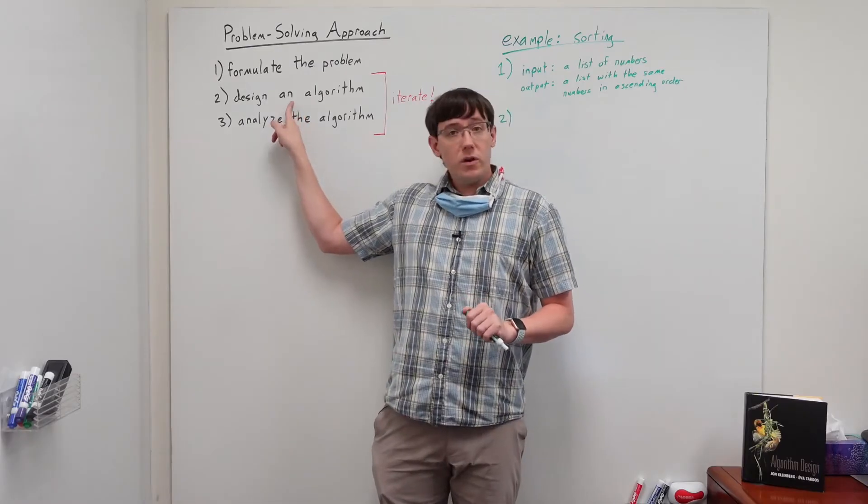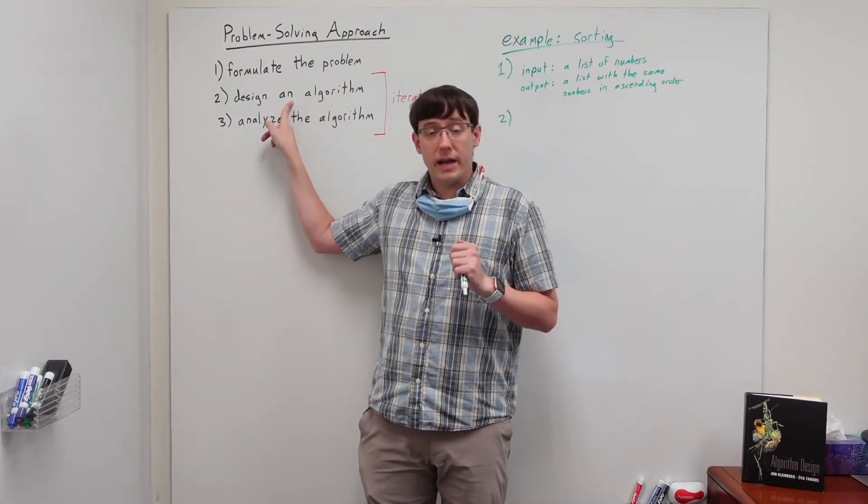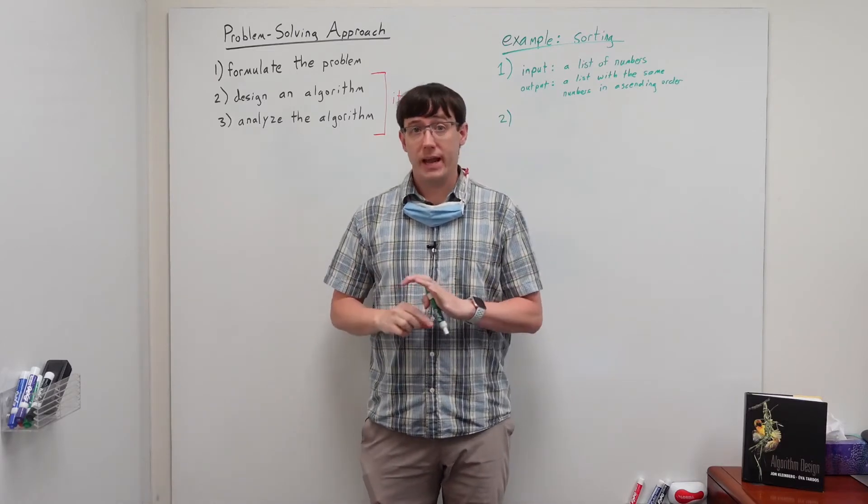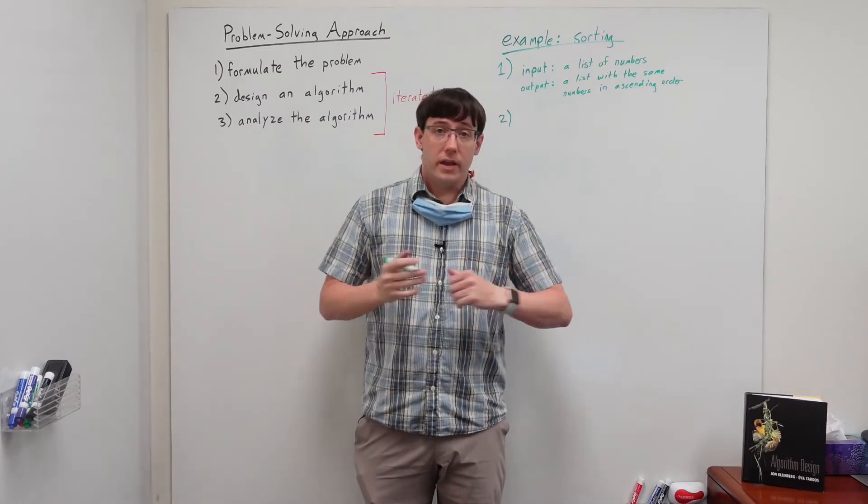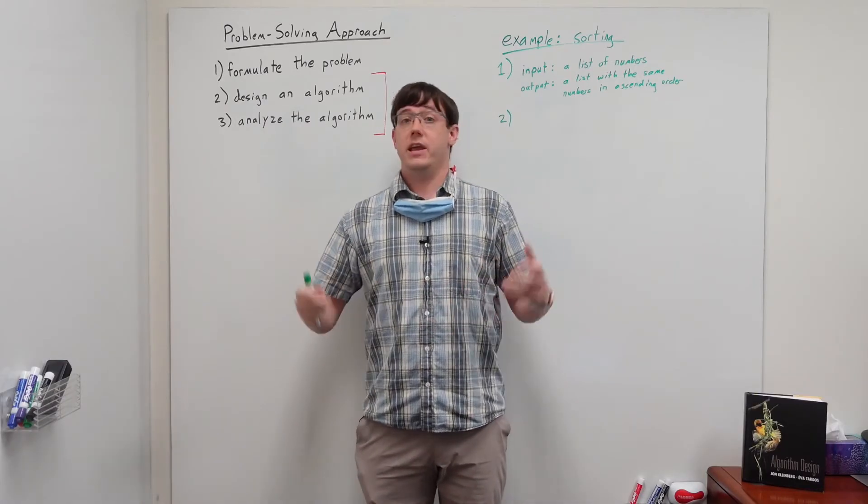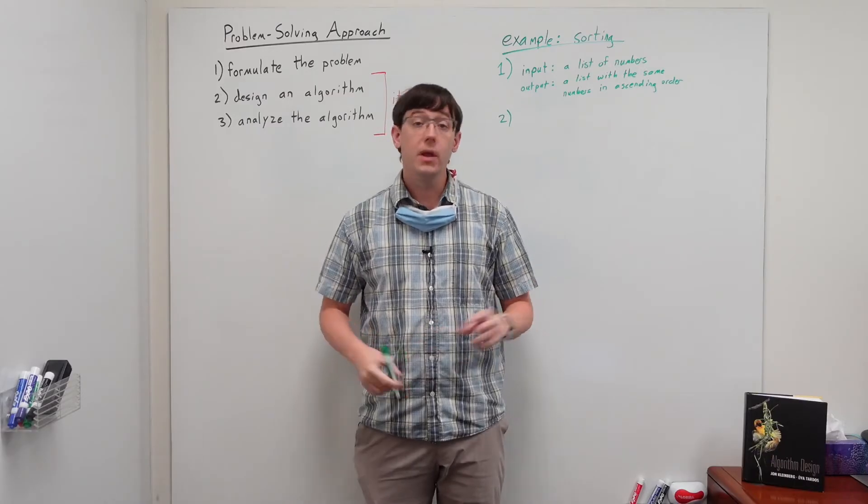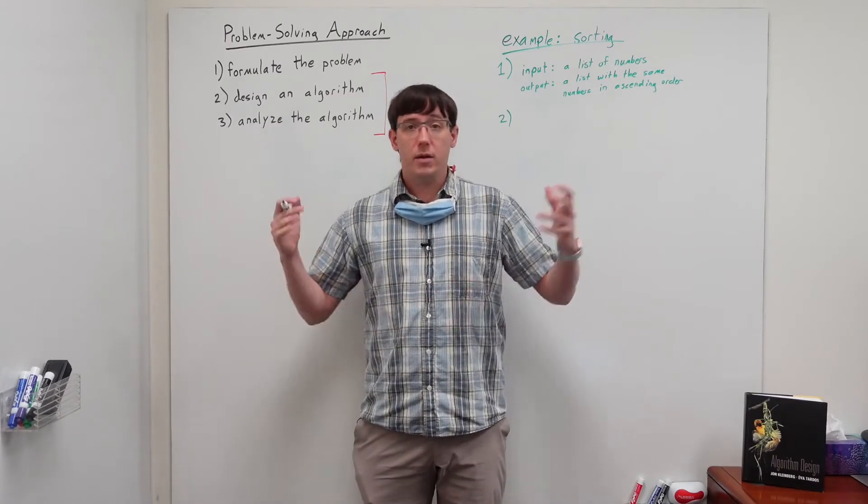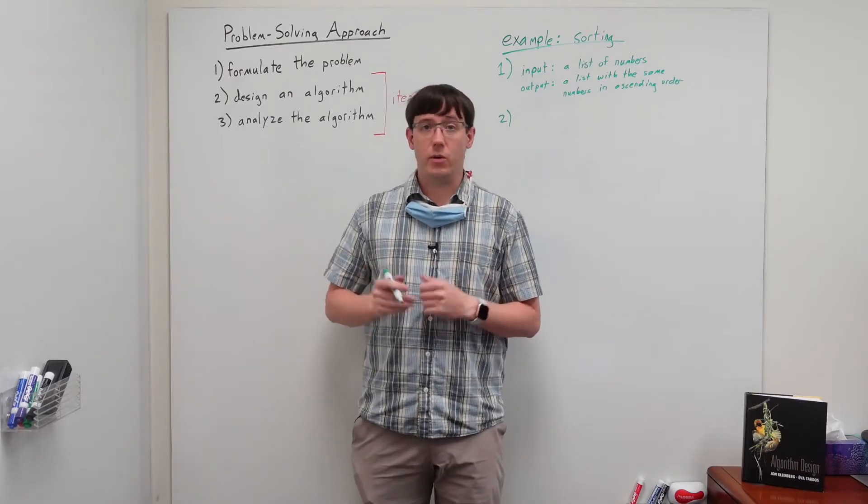And when we're designing an algorithm, it's a very good idea to start with the simplest possible thing we can think of. So, if we're trying to solve the problem of sorting, and we're trying to begin with a stupid simple algorithm, some ideas might be to just randomly reorder the list, and then check whether it's sorted.